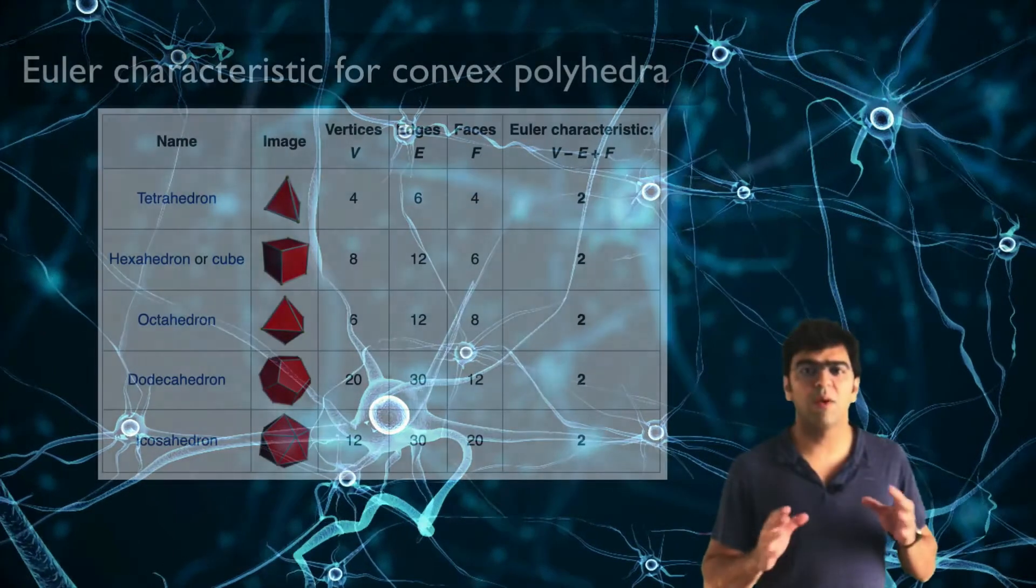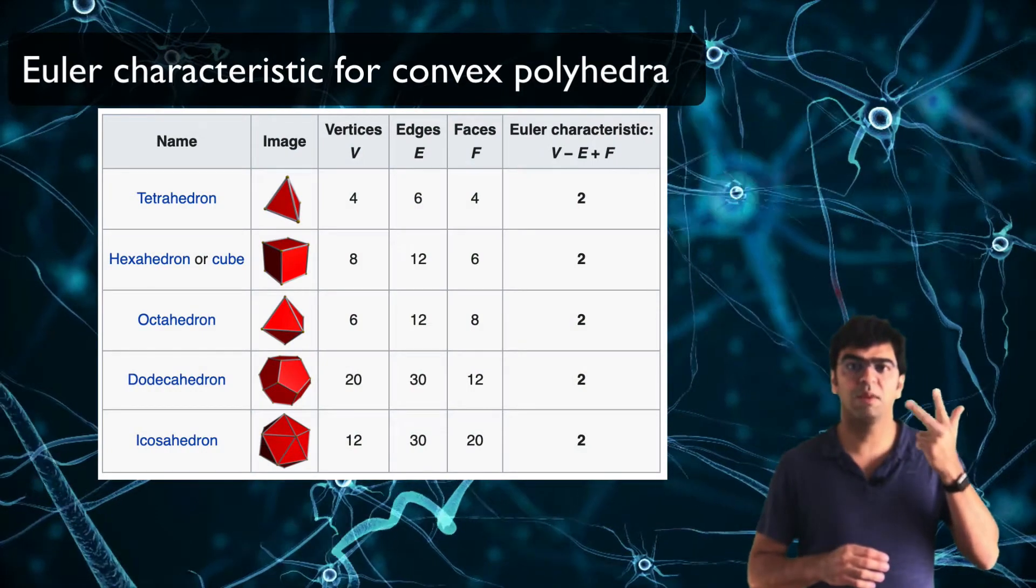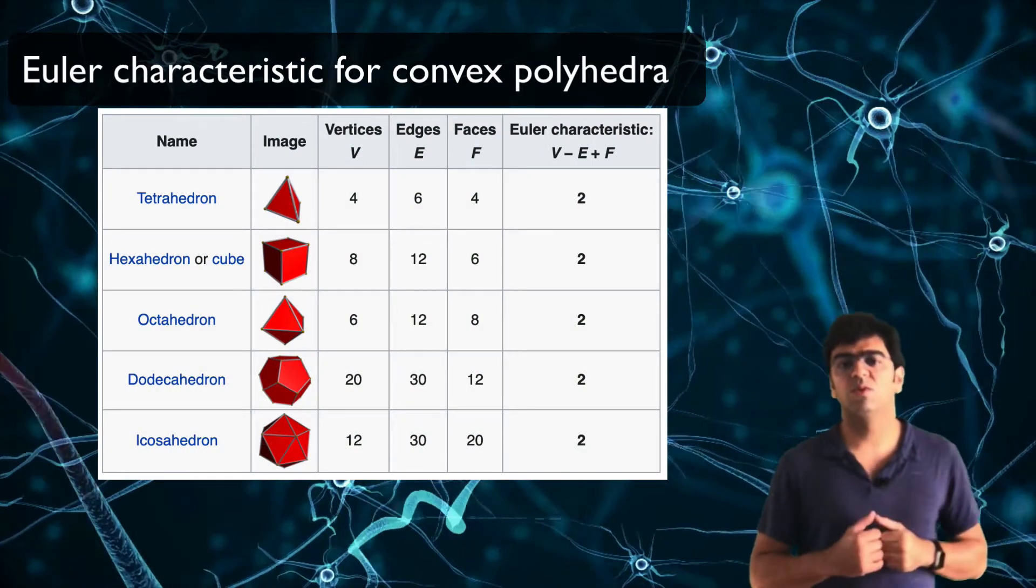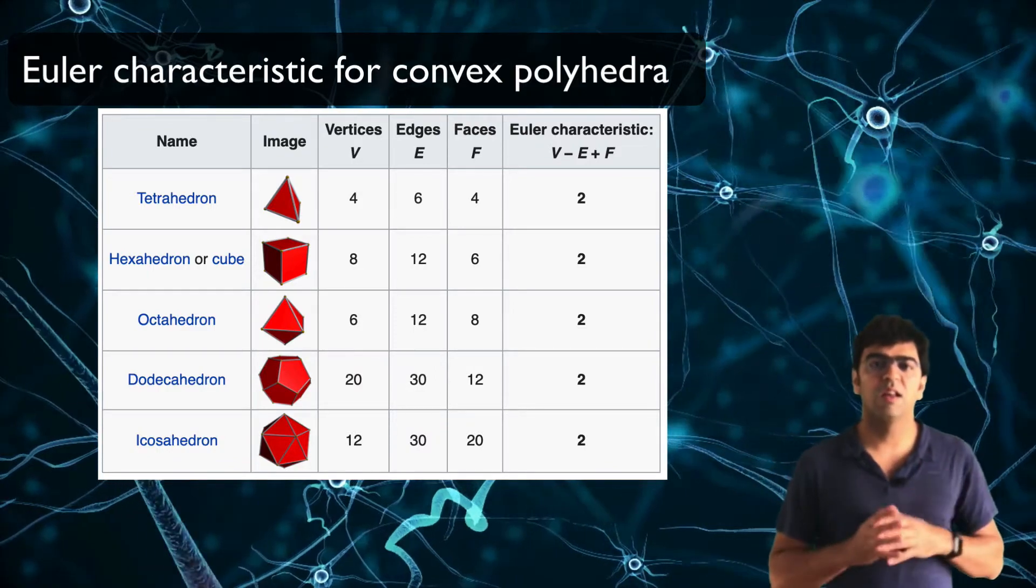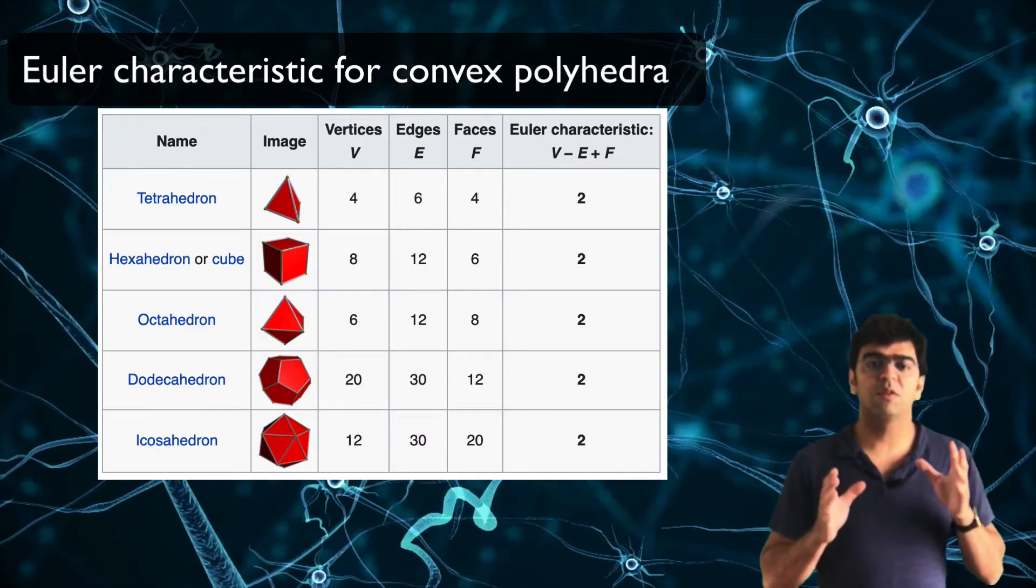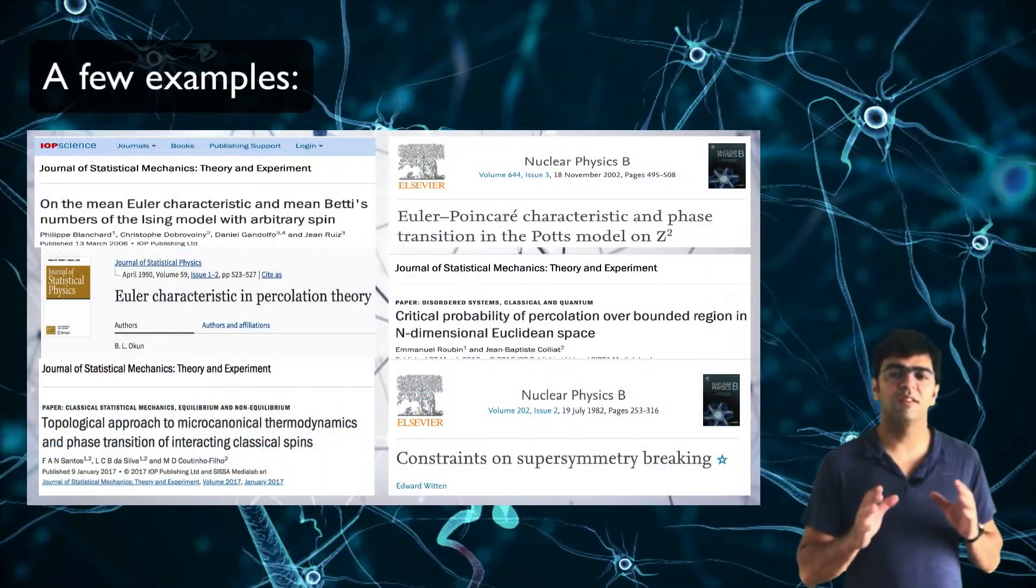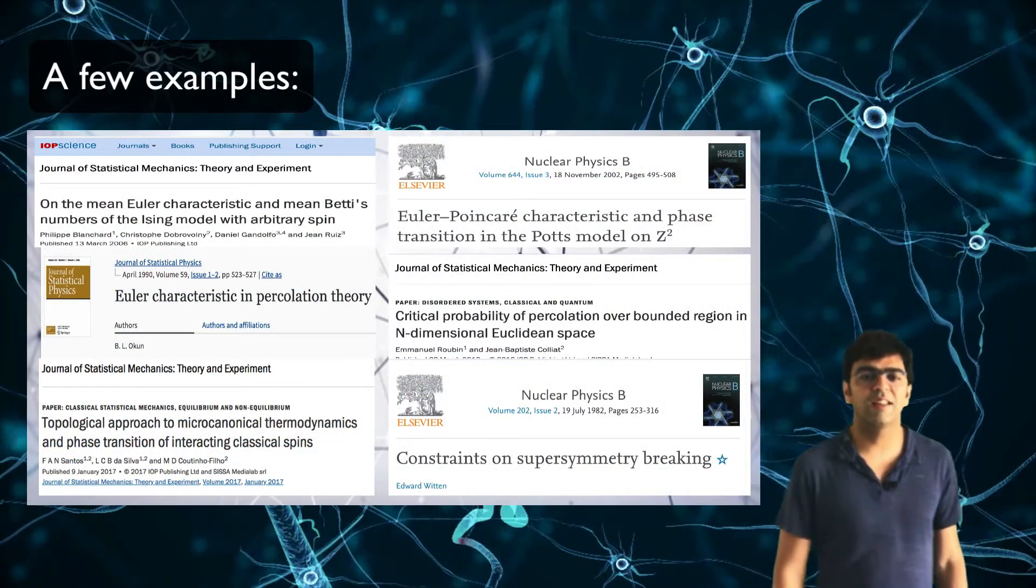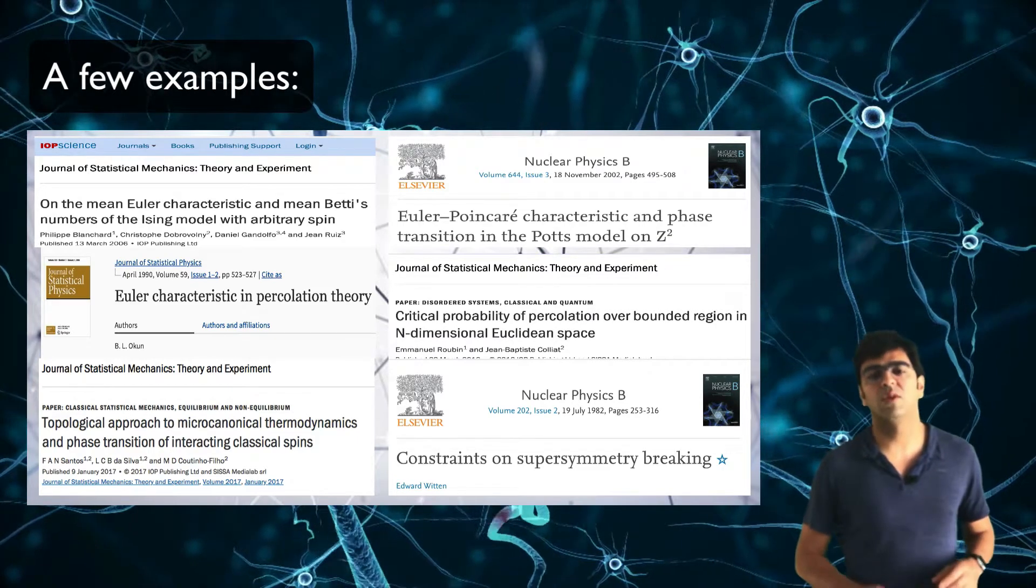The Euler characteristic is a topological invariant. For any polyhedron, vertices minus edges plus faces is equal to 2. This is because the Euler characteristic is a topological invariant, in this case isomorphic to a sphere. In several papers in theoretical physics, it was shown that the Euler characteristic is related to phase transitions in classical Hamiltonian systems.